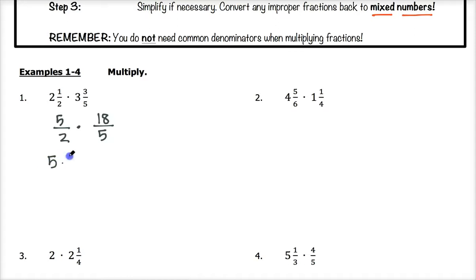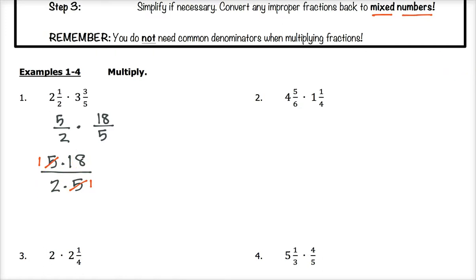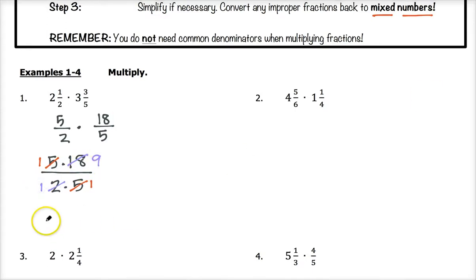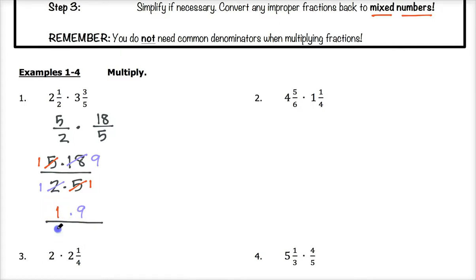So we're going to do five times eighteen over two times five. We look for opportunities to cancel up and down. I see we have a five on the top and the bottom, so I can divide both of those fives by five and replace them with ones. I also have a two and an eighteen that I can divide both by two — eighteen divided by two is nine and two divided by two is one. So we end up with one times nine on the top and one times one on the bottom. One times nine is nine and one times one is one, so we get nine over one, which is simply equal to the whole number nine.